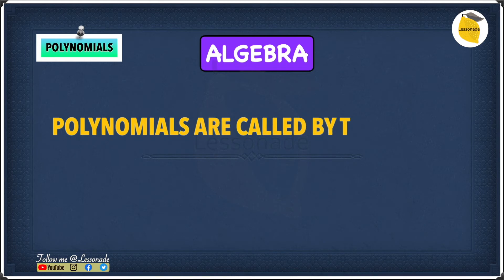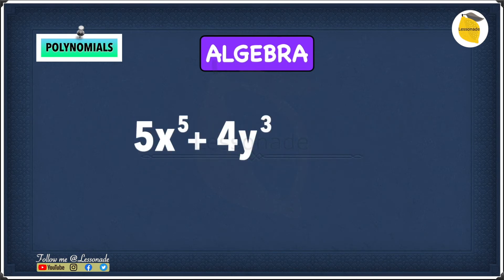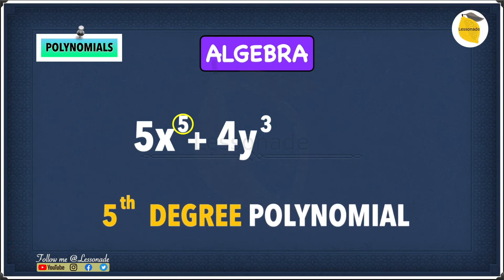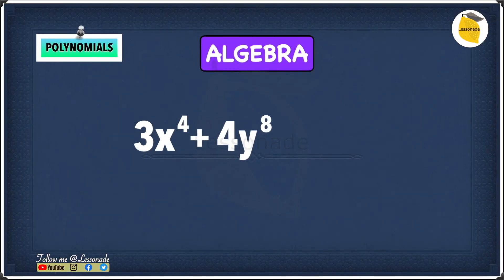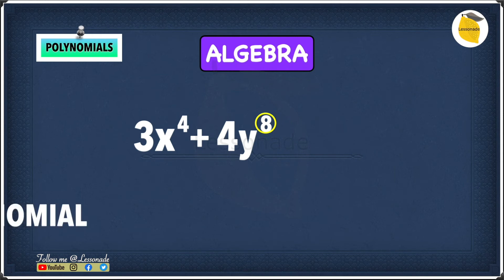Polynomials are also named by the degree of the highest term. For example, 5x raised to the power of 5 plus 4y raised to the power of 3 — the highest degree term is the 5th degree term, so this is a 5th degree polynomial. Another example: 3x to the power of 4 plus 4y to the power of 8 — the highest degree term is 8, so this is an 8th degree polynomial.